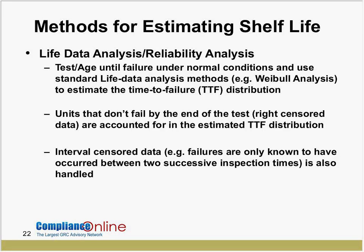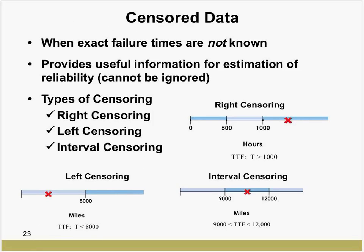This concept is called censoring. Right censoring means a unit survived a certain period and never failed — we give credit for surviving, say, 1,000 hours. Or a unit might fail because component A degraded too much while B did not, so for B, the time to failure is greater than 1,000 hours. There's also interval censoring, where failure occurred between inspection intervals and we don't know exactly when. Left censoring means failure occurred prior to some known time.